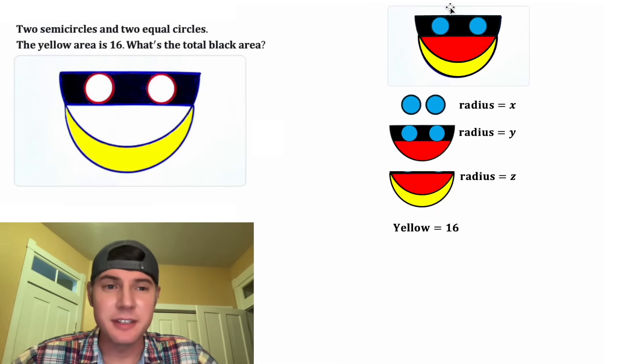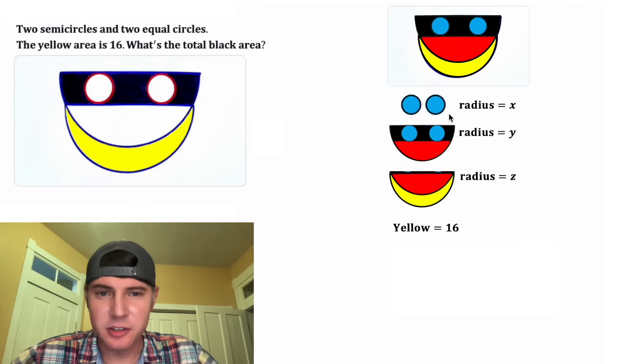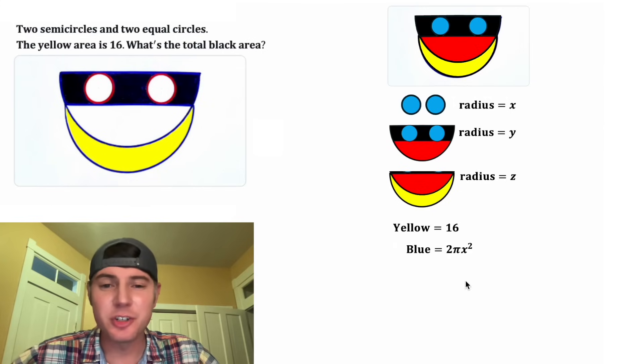First, we're given that the yellow is equal to 16. Next, let's do the blue. If the radius is equal to X, then each circle would be pi X squared. And then because there's two of them, the blue region would be two pi X squared.